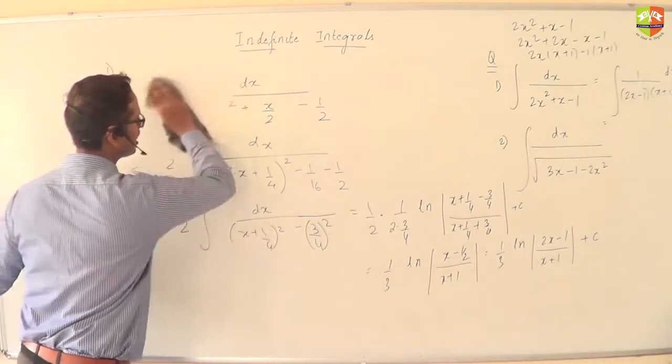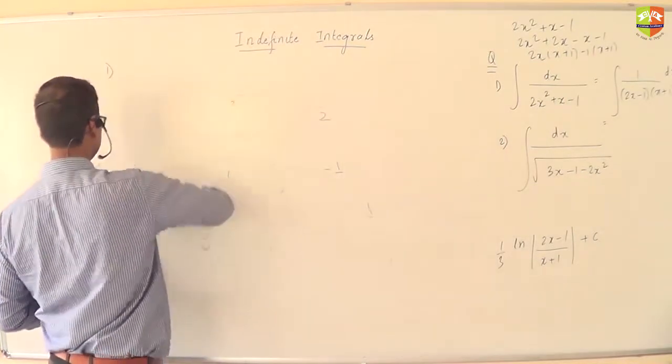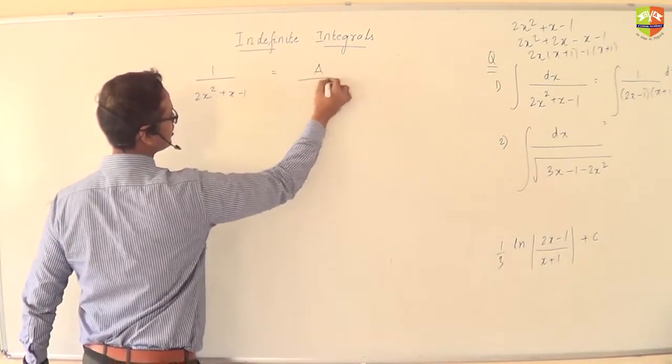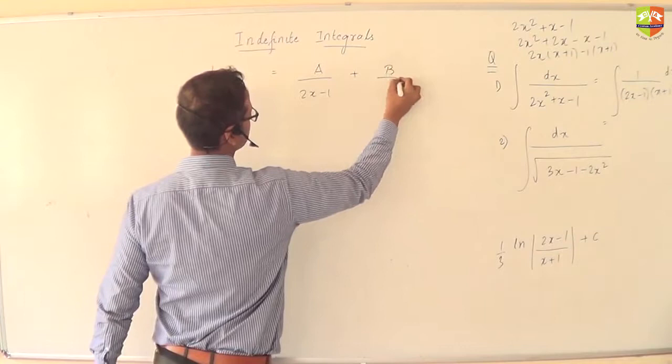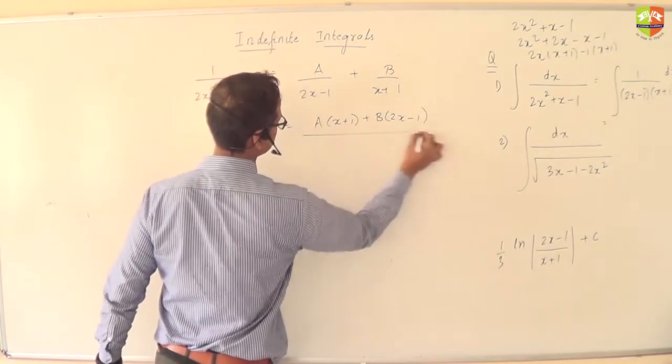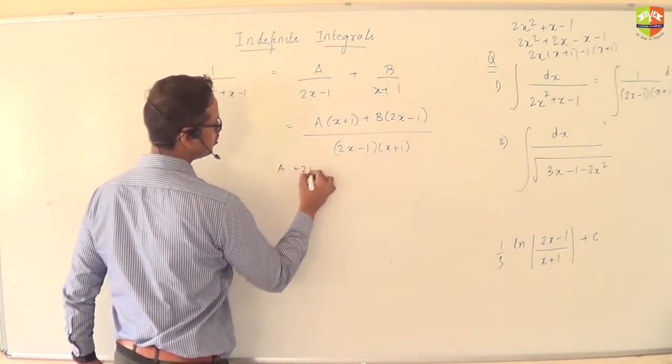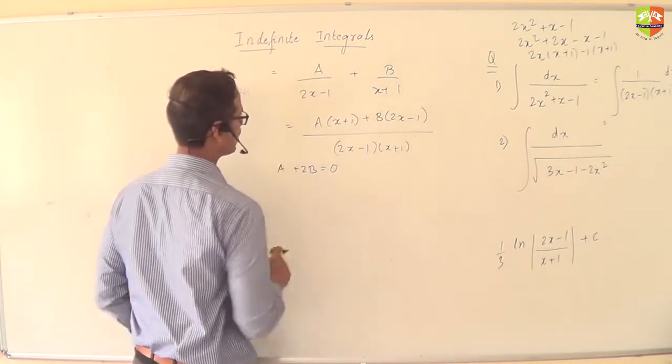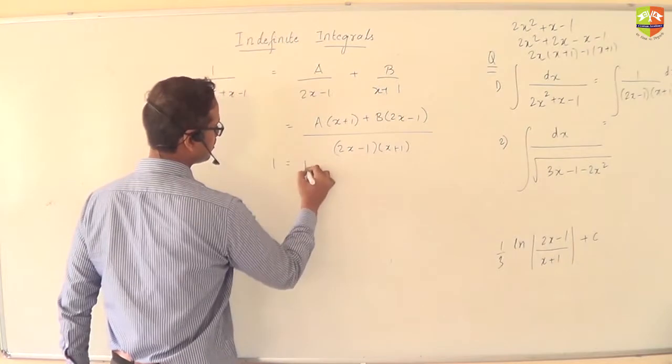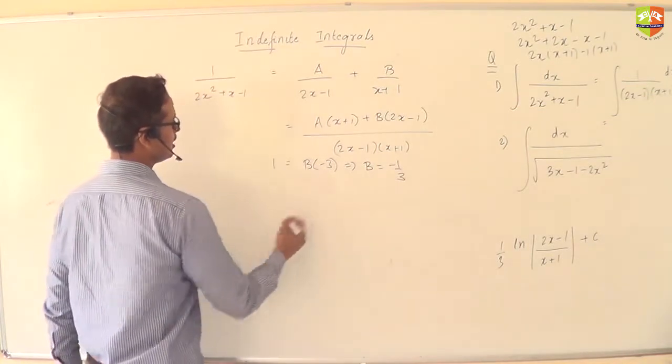Now I am solving it by partial fraction approach. I will not erase my answer. So I will just see whether my answer is coming out to be the same. So first of all, 1 by 2x square plus x minus 1 can be written as a partial fraction in this way. Let's find a and b out. Comparing the coefficients a plus 2b is 0. Put the values x as minus 1, you will get b as minus 1 by 3. And put x as half, a will be 2 by 3.